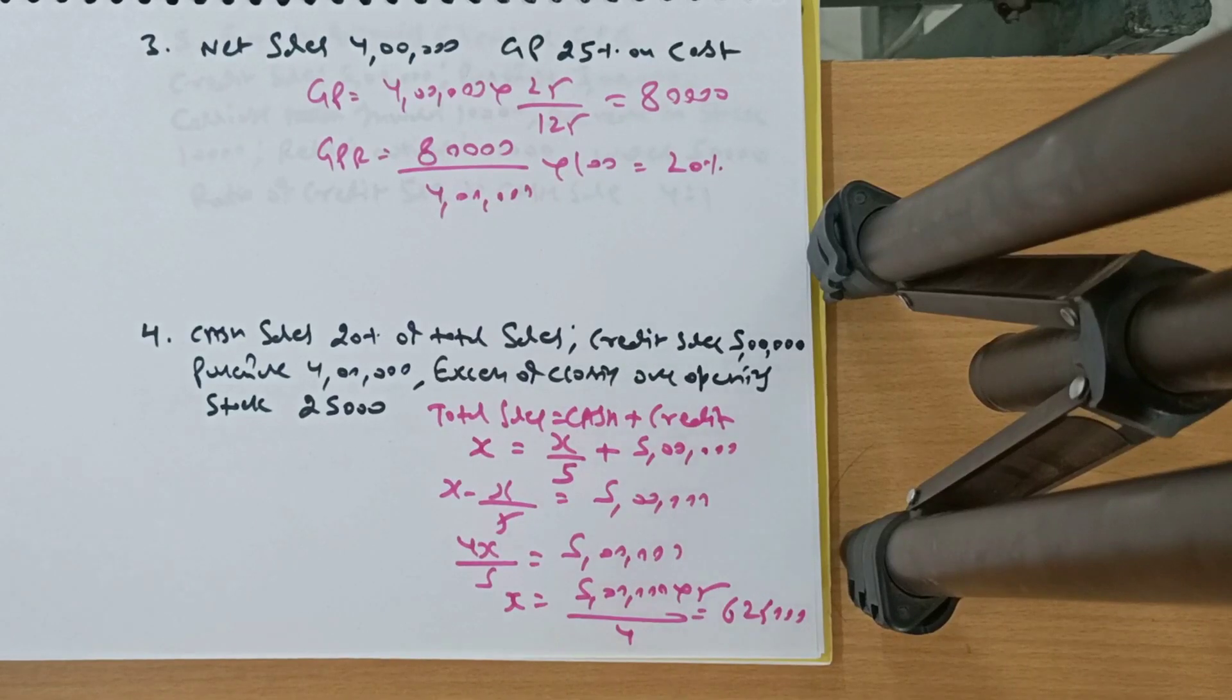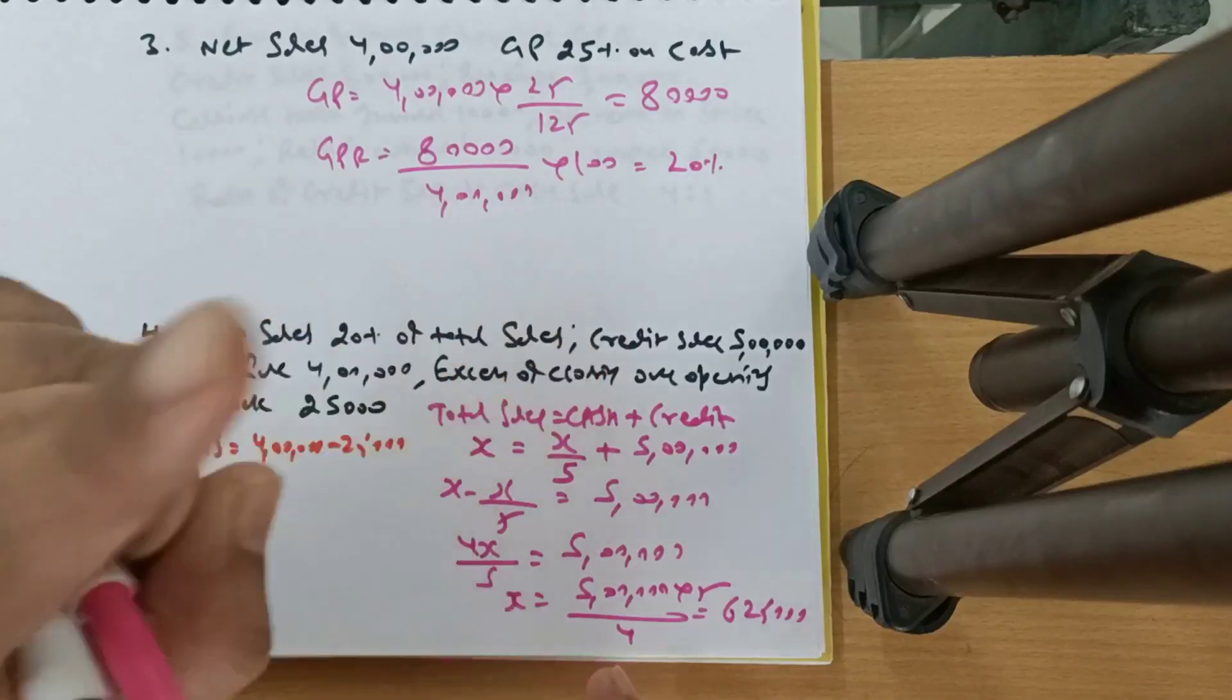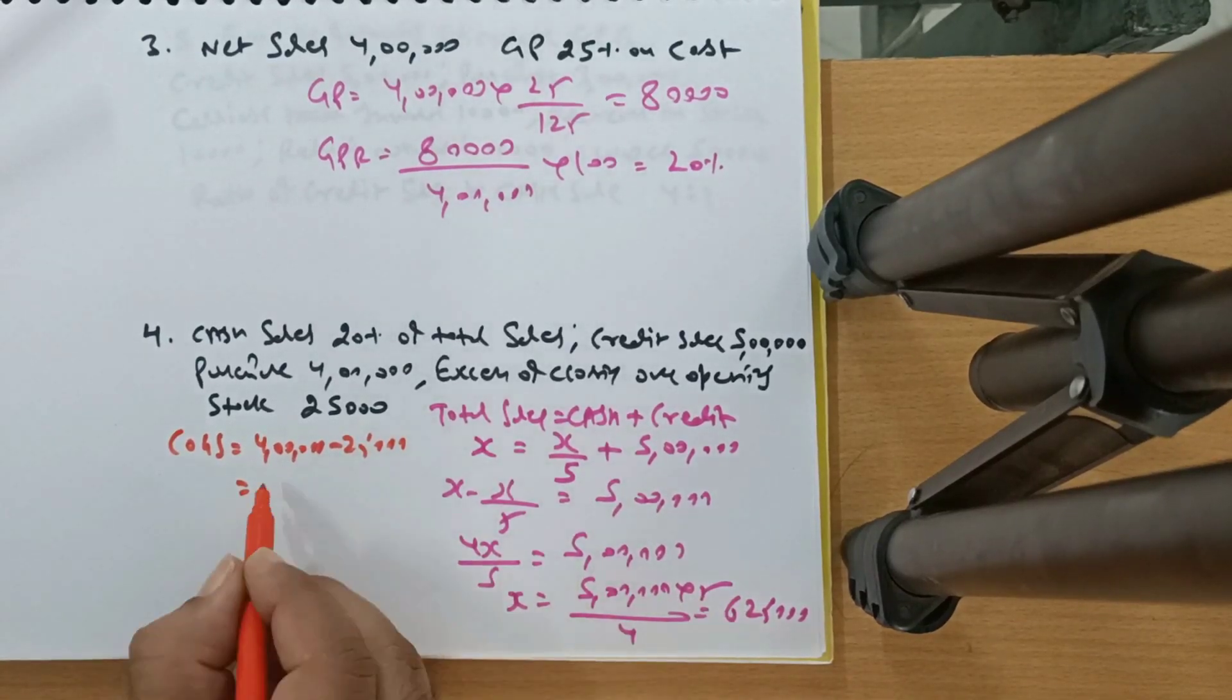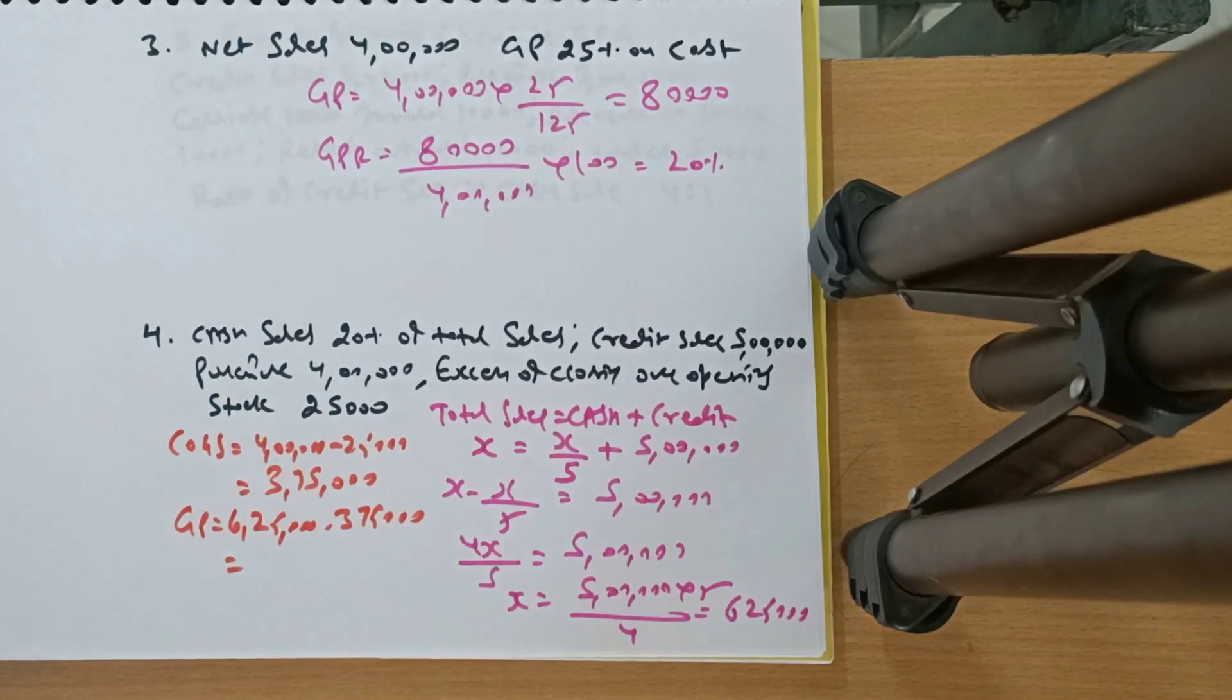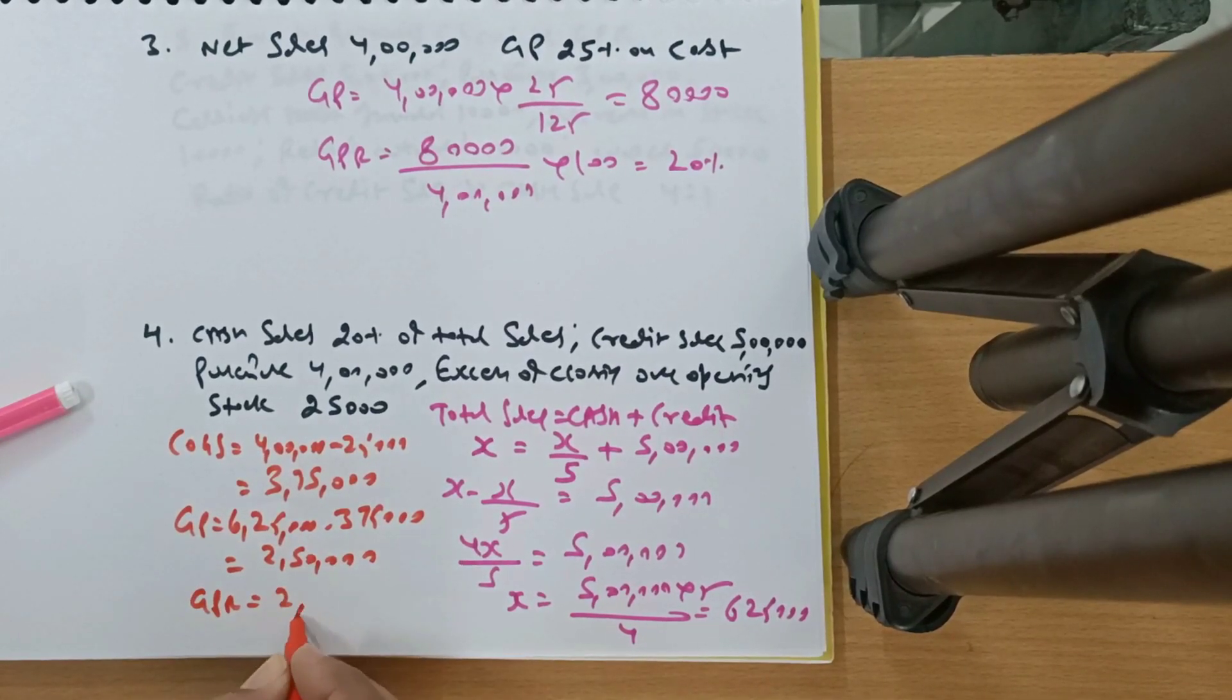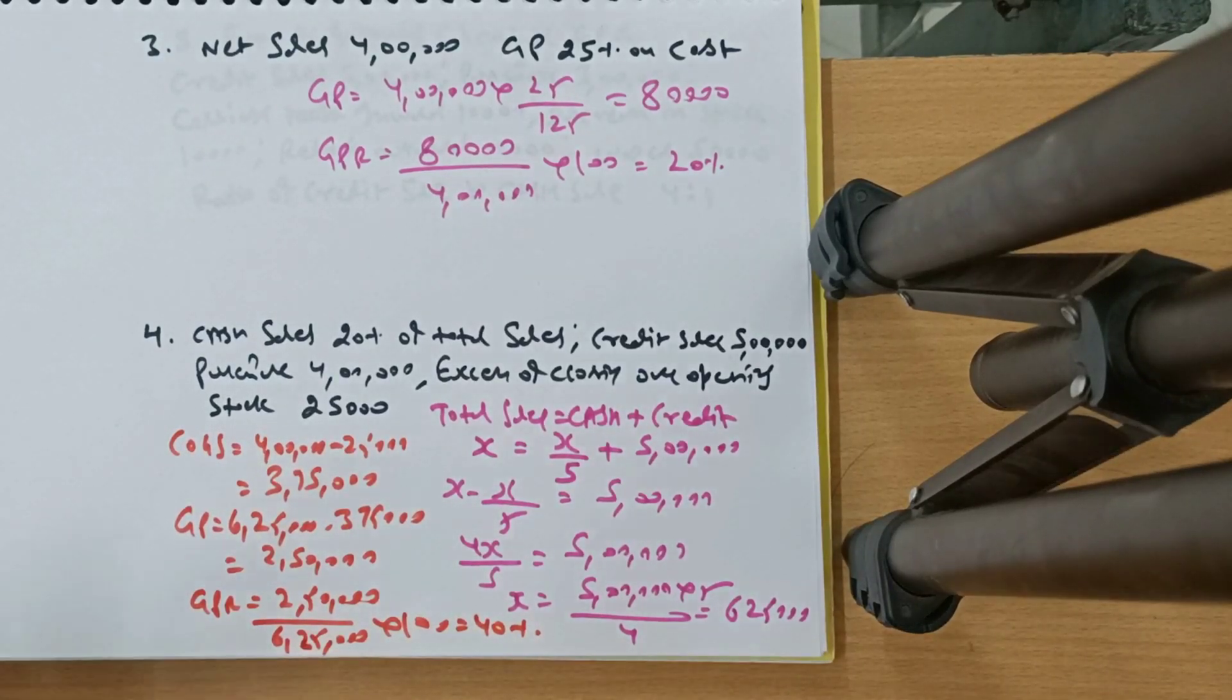Now I will do the rest here. COGS. COGS is purchase minus excess of closing over opening. If you are wondering sir, how did this happen? Check old videos, old ratios where I explained this. Specifically, stock turnover ratio video. This became 3,75,000. Now calculate GP. GP is sales minus COGS. This comes to 2,50,000. Now calculate GPR. GPR formula is GP upon total sales into 100. This is 6,25. So this comes to 40%.